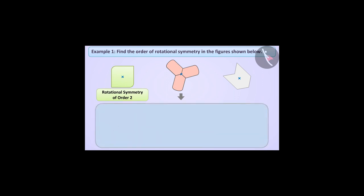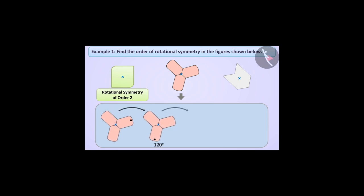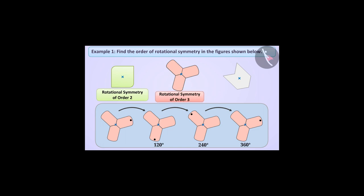Let us now consider another shape. For our convenience, we will mark a dot here. If this figure rotates around the center of rotation by an angle of 120 degrees, 240 degrees, and 360 degrees, it will look exactly in the same state as before. We can say that the second figure has rotational symmetry of order 3.